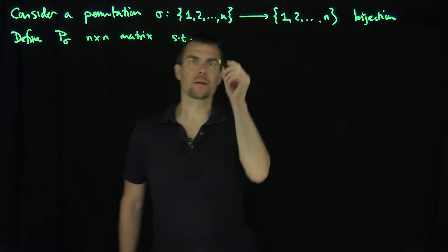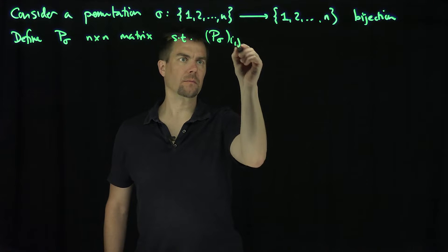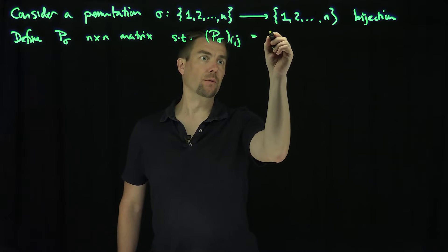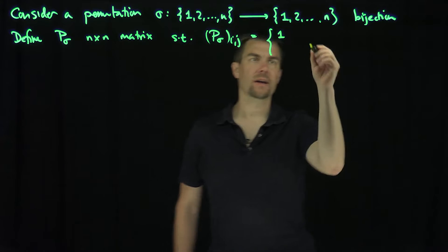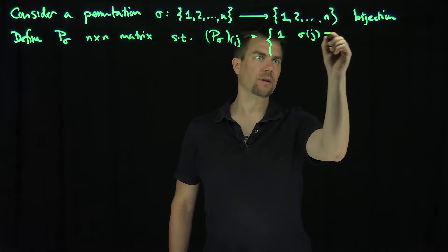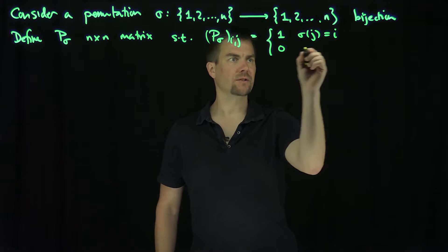Such that the i,j entry of this matrix is equal to 1 if sigma of j is equal to i and 0 else.